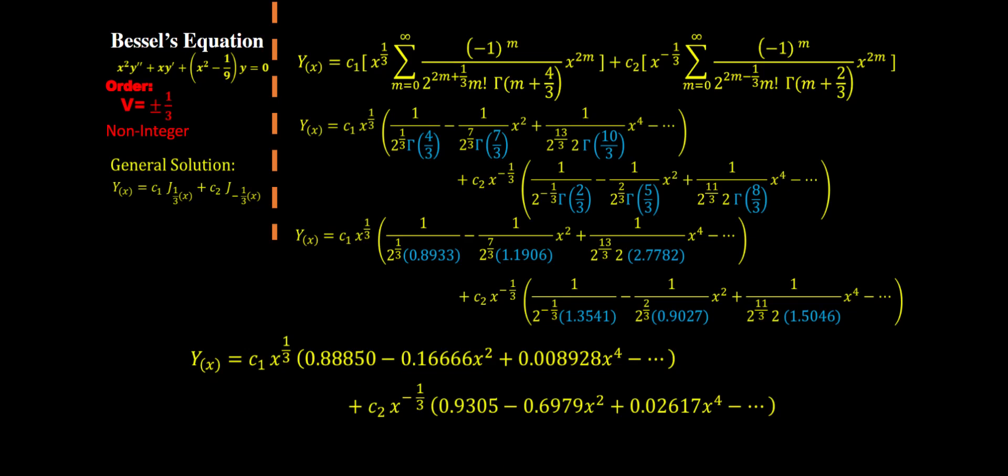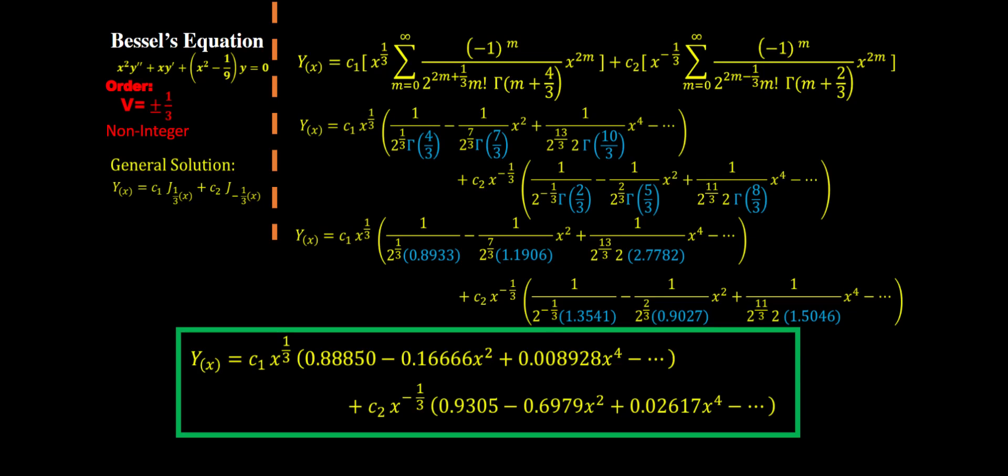And here it is. Every single term cleaned up and in the parentheses we can see that we obtained nice little polynomials. This is what we're gonna call our final solution for our Bessel function that we've been working with.